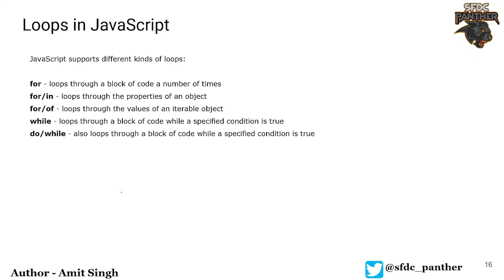Hello everyone, welcome back to the course. In the previous video we talked about conditionals and the switch statement. In this video we will talk about the various loops in JavaScript and when and how to use them. There are basically five types of loops provided in JavaScript, some of which are also supported in other languages like Java, Python, and Apex.